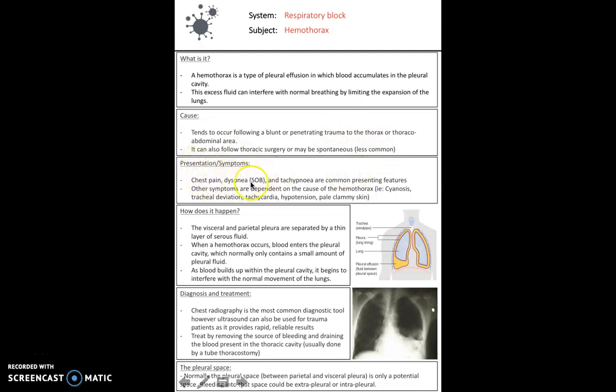The excess fluid can interfere with normal breathing by limiting the expansion of the lungs that is possible. Usually a hemothorax tends to occur following a blunt or penetrating trauma injury to the thorax, but it can also occur following surgery, and sometimes it can be spontaneous as well, although this is less common.